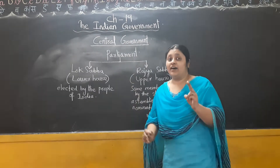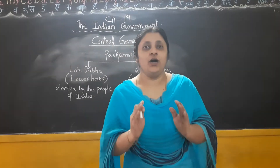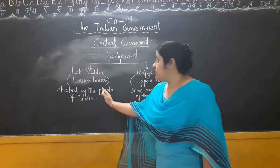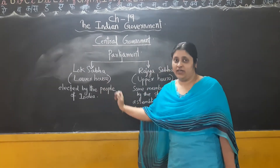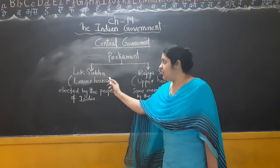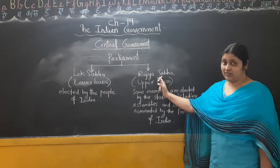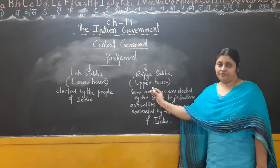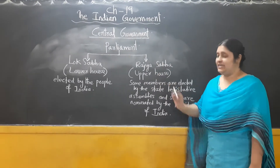In Parliament, there are two houses. The first one is Lok Sabha, which is the lower house of Parliament. The next one is Rajya Sabha, which is also known as the upper house of Parliament.